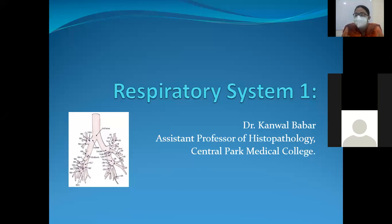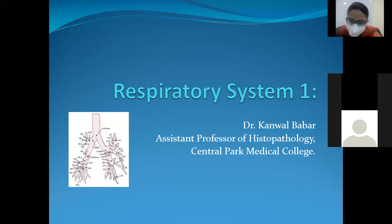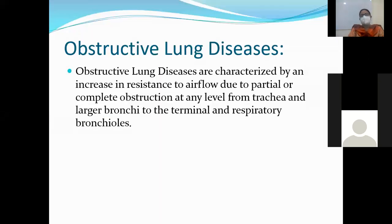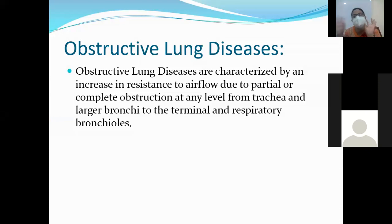My dear students, we will continue the discussion of the respiratory system. Hope you all know about the normal anatomy of the respiratory system. In our respiratory unit, we can divide the respiratory chapter into two types: the non-neoplastic and the neoplastic. First of all, we will discuss the non-neoplastic condition of the lung.